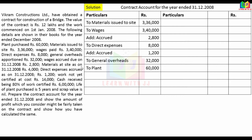Material at site as on 31-12-2008 — this is closing material. In the contract, the material issued was Rs. 3,36,000. The material remaining at site is Rs. 4,000, so that becomes the balance on the credit side.